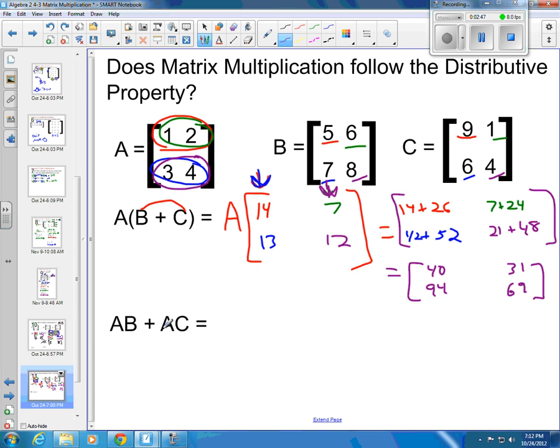We want to take A times B and A times C and see what we get. So let me clean this up just a bit. Erase that part off there. And then erase this one off here. So A times B, this row times that column. That's going to be 5 times 1 is 5 plus 2 times 7 is 14. And then I'm going to take first row times second column. So 1 times 6 is 6 plus 2 times 8 is 16.